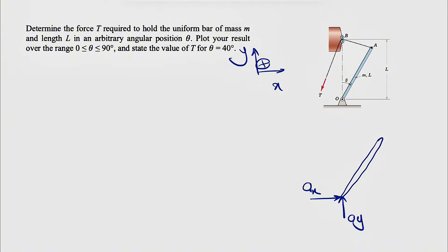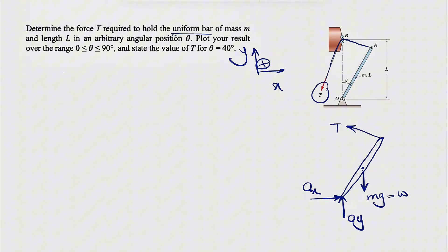Since we have a uniform bar, the center of mass is exactly at the center, so the distance is L/2, and the force there is the weight mg. We also have a cable attached to point A - a single cable going around the pulley - which means we have the same tension T throughout that single cable.